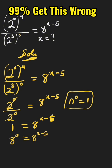Now we compare the bases. Base 8 cancels base 8, leaving us with 0 equals x minus 5. Collecting like terms, we move minus 5 across the equality sign, giving us 0 plus 5 equals x. Finally, x equals 5, which is the answer. To check, we substitute x equals 5 into the original equation.